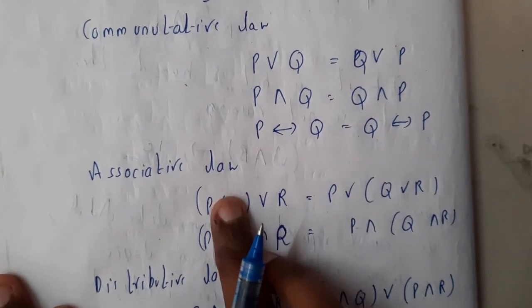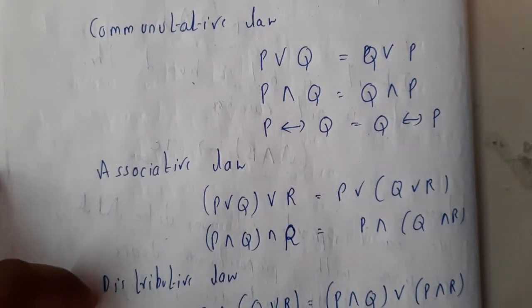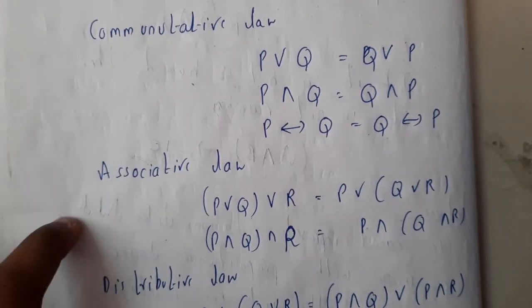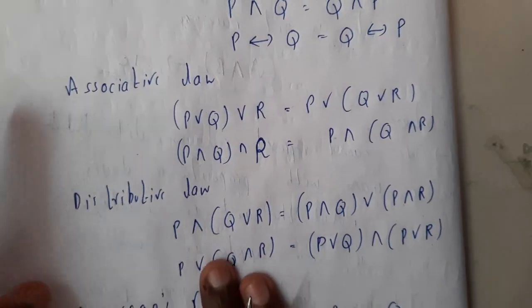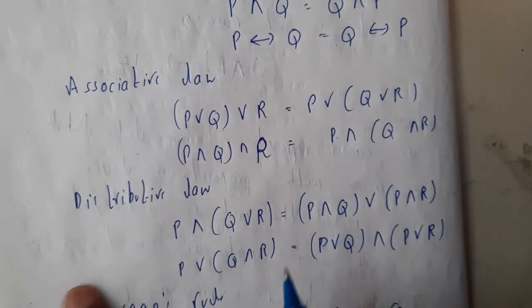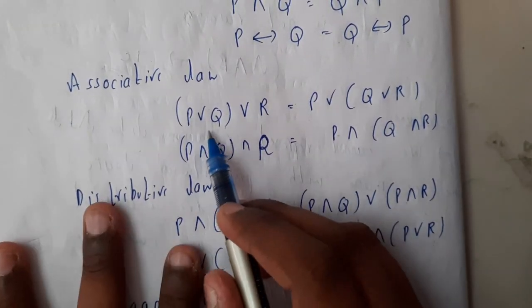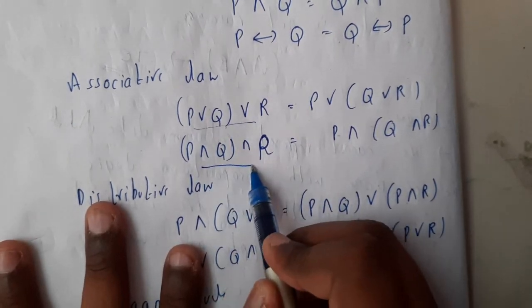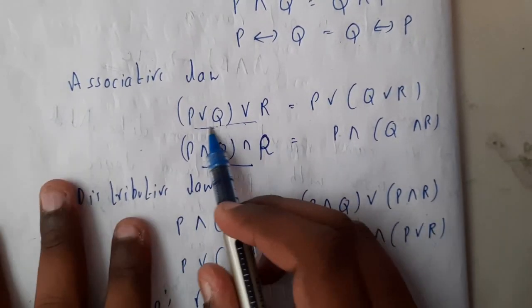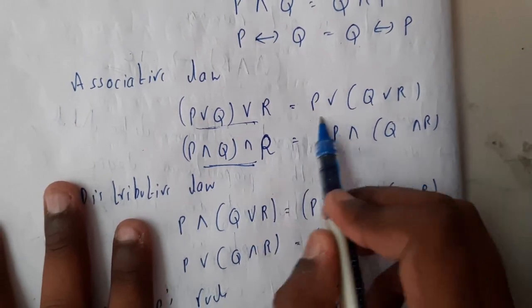Associative law: please remember this, associative and distributive laws, because these two we will be using in conversions of few problems. So please note them down somewhere. Basically, if you observe, all are ∨'s only here, all are ∧'s only. V is nothing but or, all ors and all ands, so you can change the brackets.